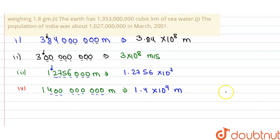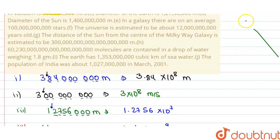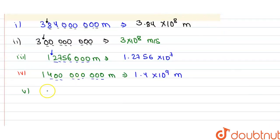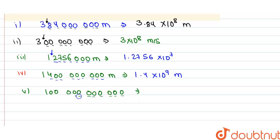Now the fifth statement: in a galaxy, there are on average 100,000,000,000 stars. So we have 100,000,000,000 stars. This number can be written in standard form by counting the digits: 1, 2, 3, 4, 5, 6, 7, 8, 9, 10, and 11. So we have 1 × 10¹¹. After 1, there are no non-zero digits, so we don't need to write anything after the decimal place.